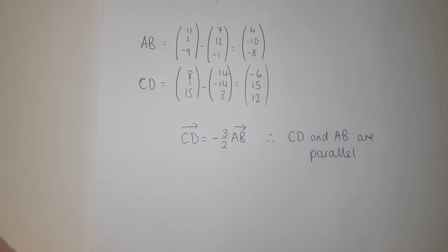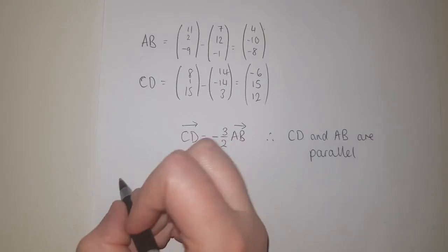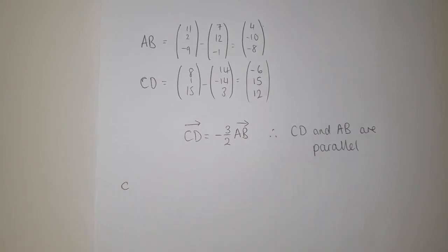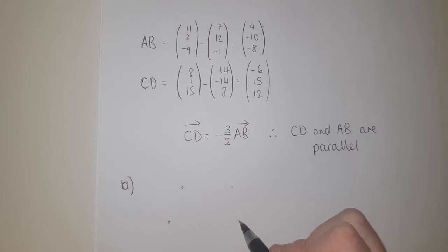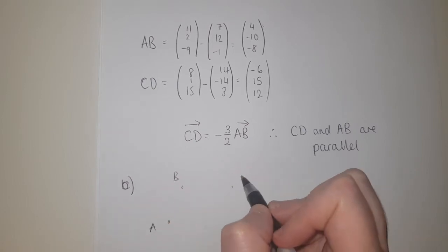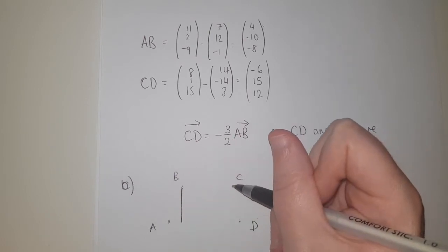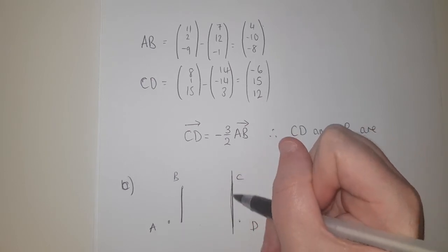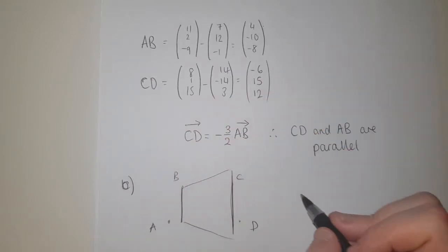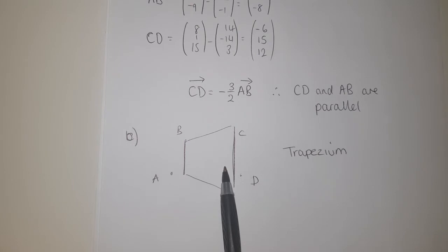Part B: describe the quadrilateral ABCD. We know AB and CD are parallel lines but different lengths — |AB| would come from (4,−10,−8) and |CD| from (−6,15,12), which are not equal. Two parallel sides of different lengths means the shape is a trapezium. Any time you want to prove a trapezium, just show two parallel lines of different lengths.